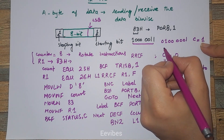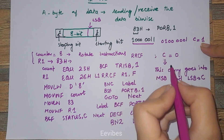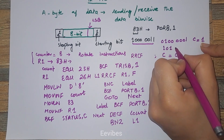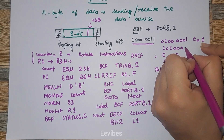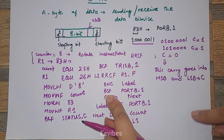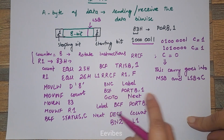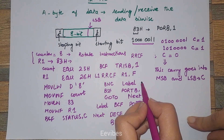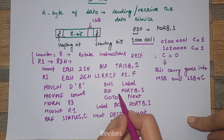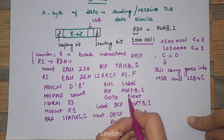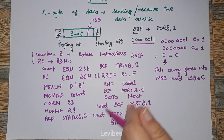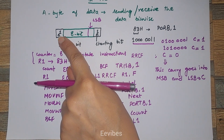At label 1 we rotate the contents of R1 again. After the second rotation, carry goes into the MSB — the register now holds 1010 0000 and carry becomes 1 again. Since branch-not-carry is still not satisfied, we again set the first bit of Port B equal to 1, and the process continues for all 8 bits.